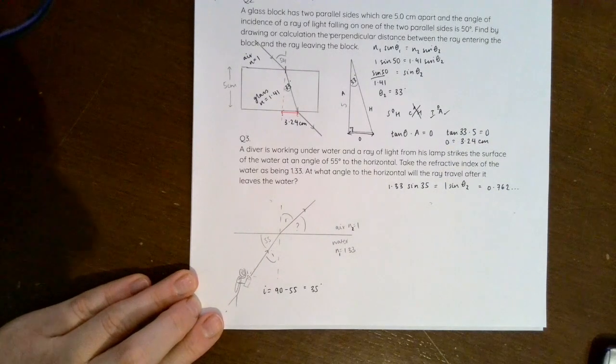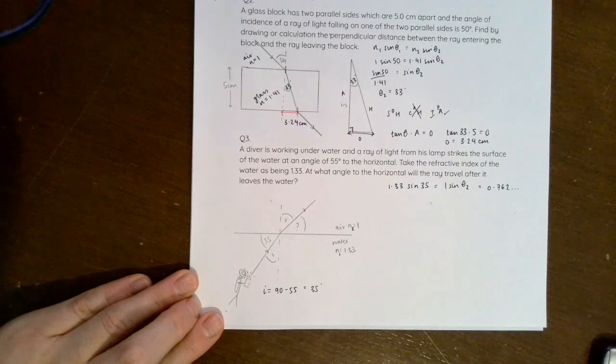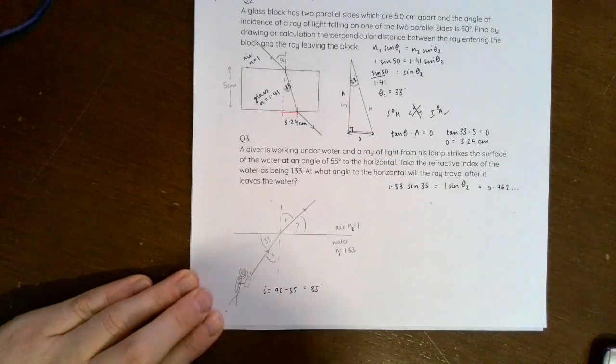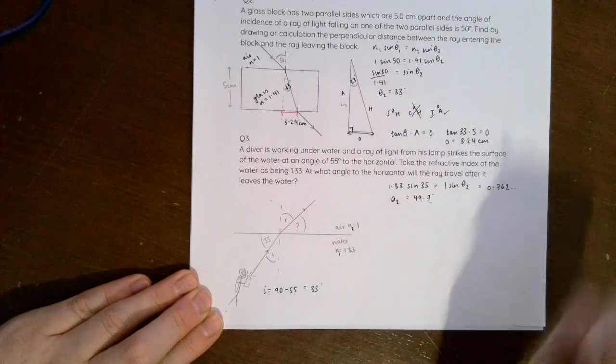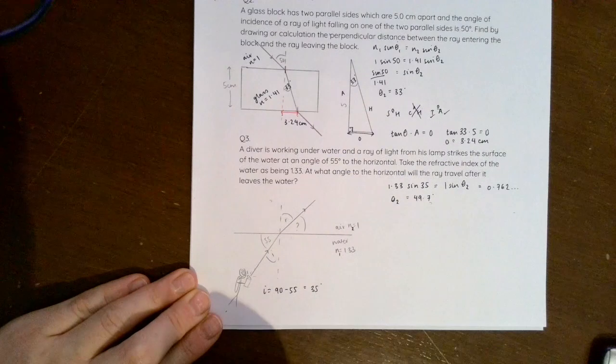I'm going to truncate that with rounding but on your calculator you can hold the value, that's fine. And I can work out that θ₂ is 49.7 degrees. If yours is slightly different with rounding that's not a problem.